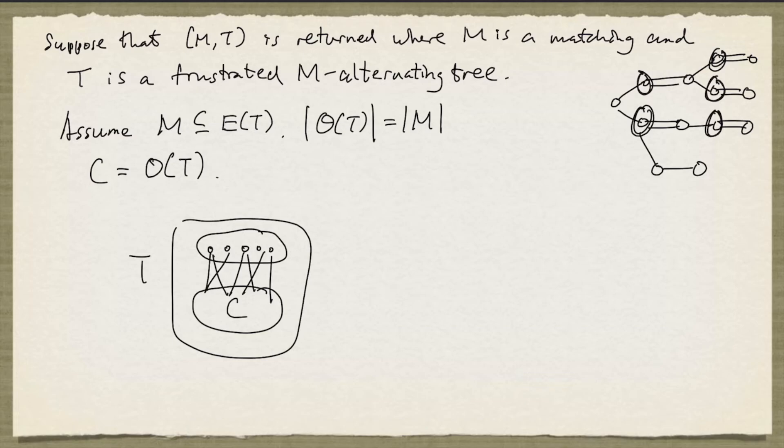So basically, if we remove C from the graph, every node in the even set will be an individual component by itself.